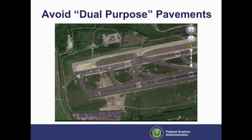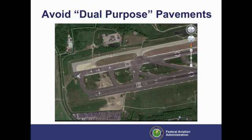In this aerial photograph of an airport, airplanes are lined up for takeoff at the end of a runway that is being used as a taxiway. Upon landing, any pilot can mistake the runway on the left, being used as a taxiway, for the active runway on the right, resulting in a catastrophe.